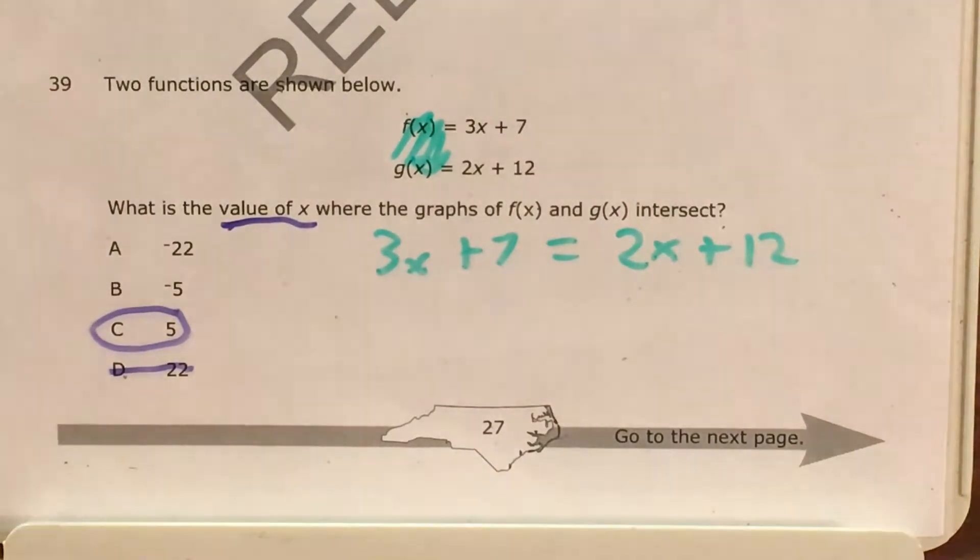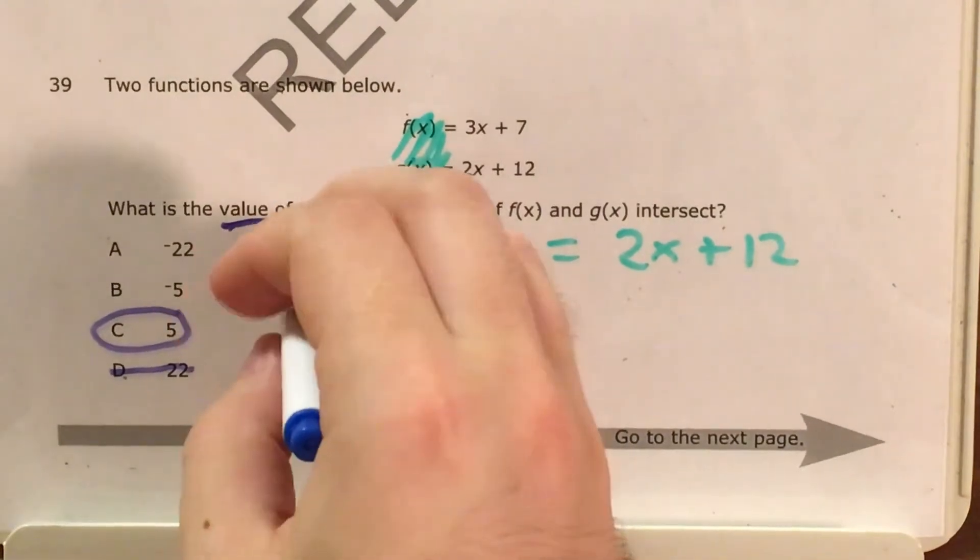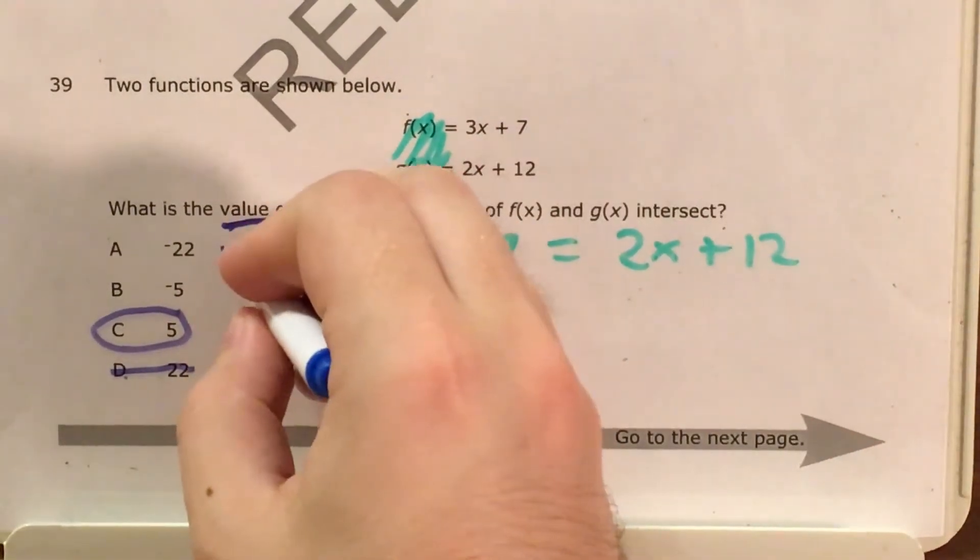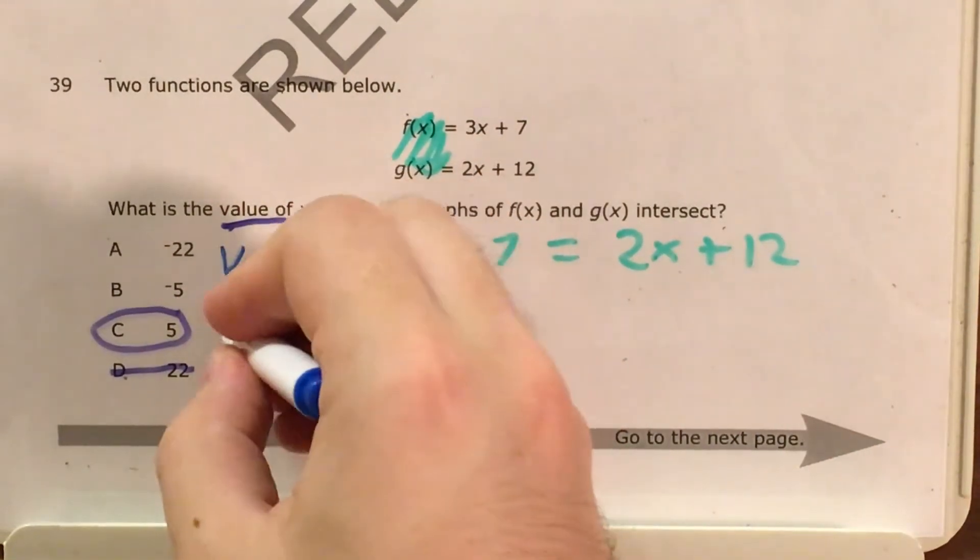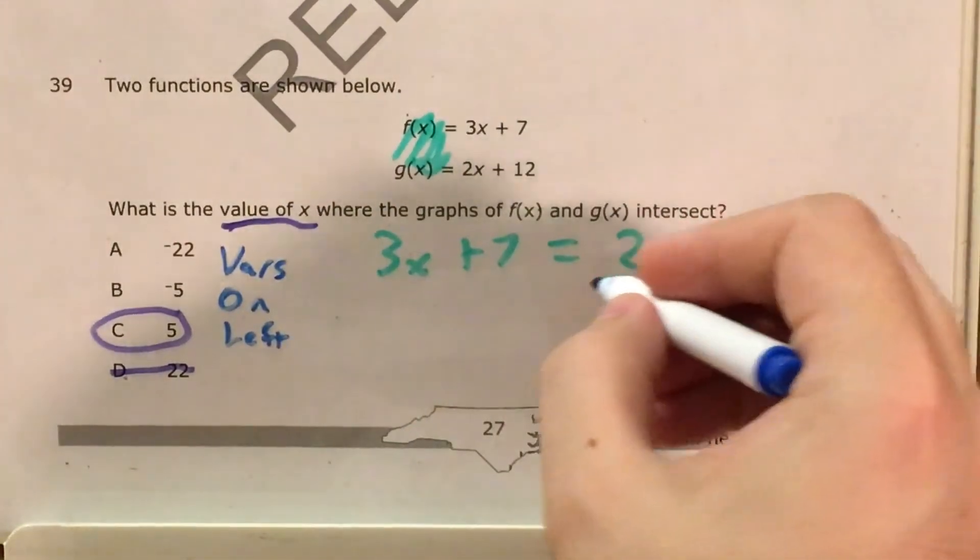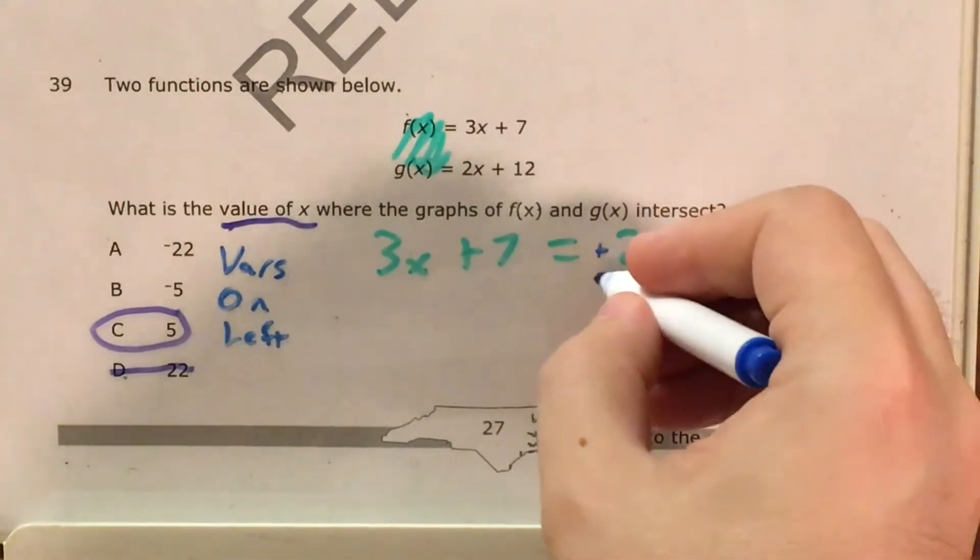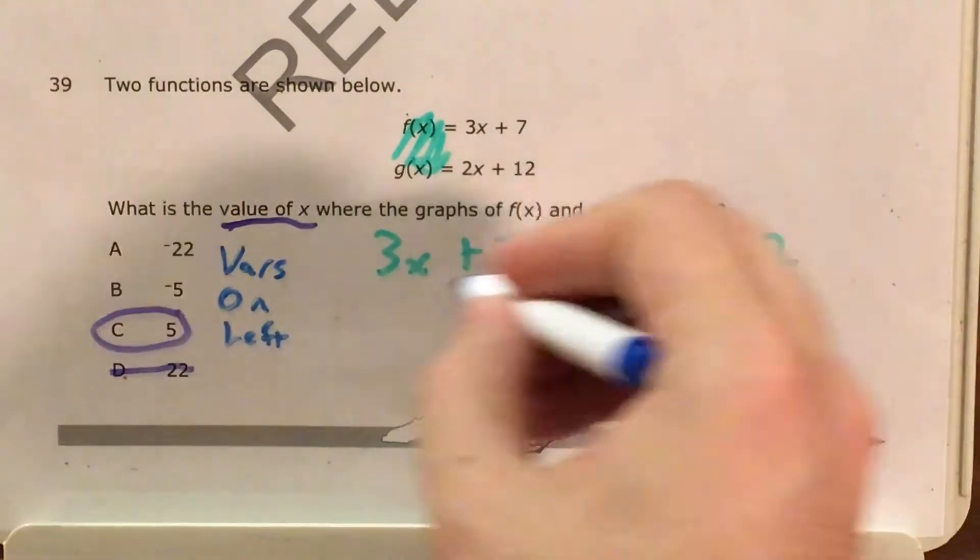So I'll go ahead and use my Vulnor trick. Get all my variables on the left to start with. So I see 2x on the right. I'll remind myself that it's positive and subtract 2x.